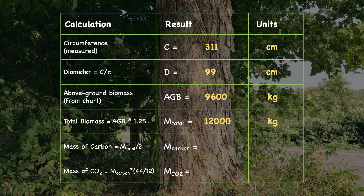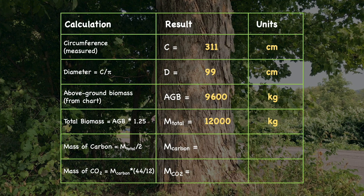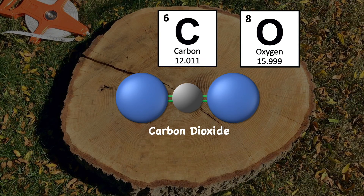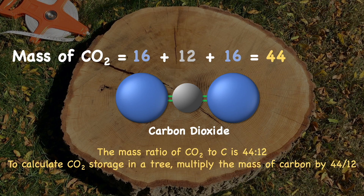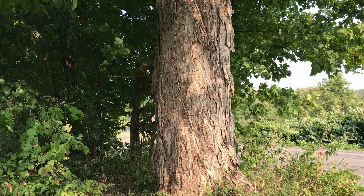So now we've answered two of our original questions: what does a tree weigh, and how do you weigh a tree? But we also want to know the mass of carbon, or carbon dioxide, that was taken out of the atmosphere by the tree and turned into stored biomass. Remember, half of the mass of the tree is carbon, so finding the mass of carbon just means dividing by 2. And finally, if we want to express this as the mass of carbon dioxide: carbon has a mass of 12 and oxygen is 16, so 2 oxygens plus a carbon is 44. The mass ratio of CO2 to carbon is 44 to 12. Therefore, to find the amount of CO2 stored in the tree, we multiply the mass of carbon by 44/12. This tree removed and stores 22 metric tons of carbon dioxide from the atmosphere.